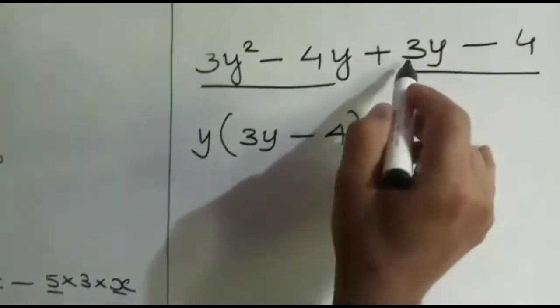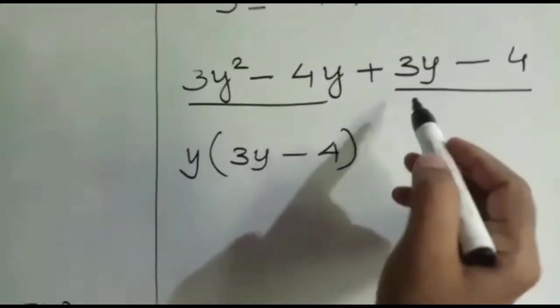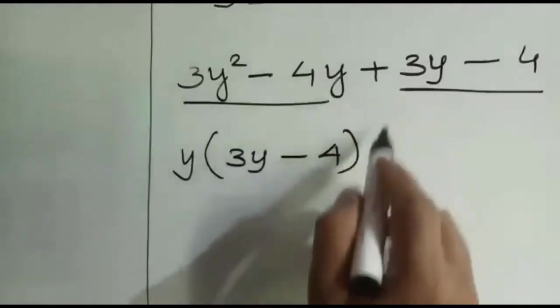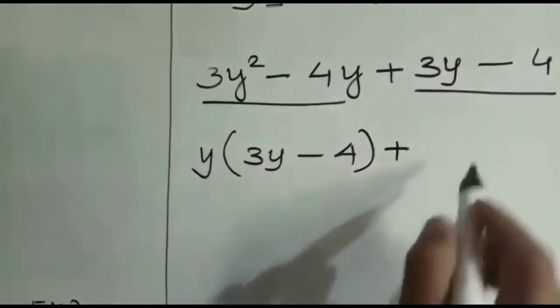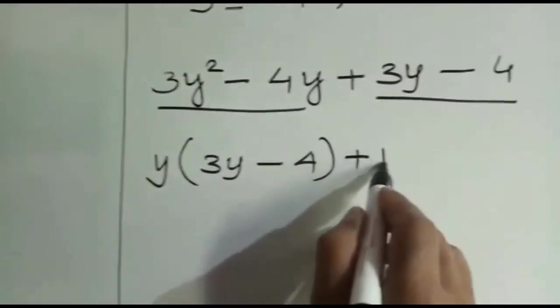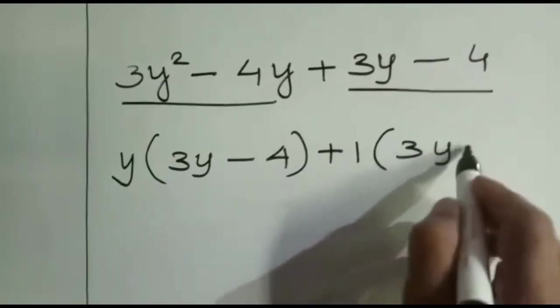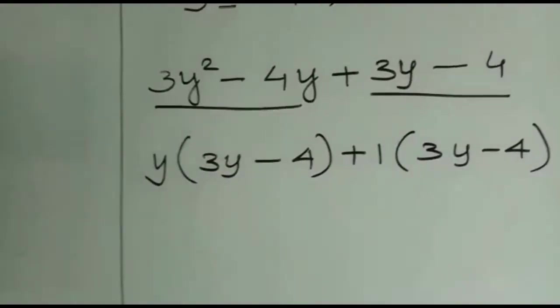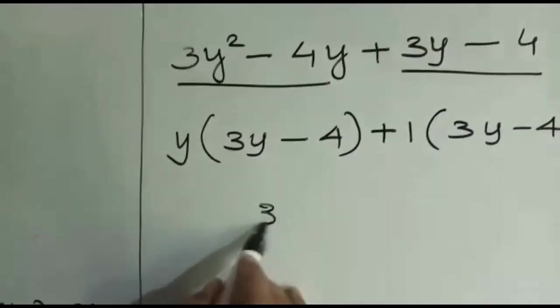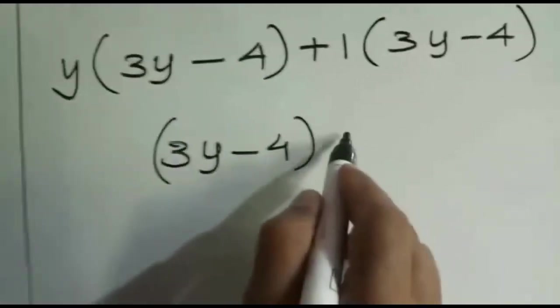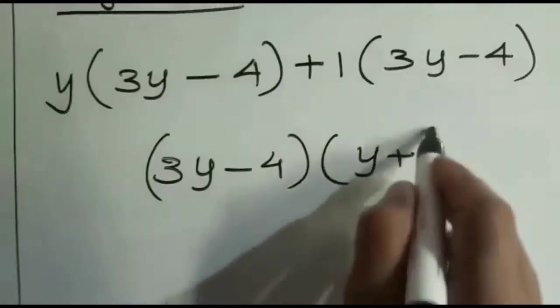From the second group, the sign of the first term, that is plus, is taken common. There is no other common factor other than 1, so 1 is taken as a common factor: (3y - 4). So the factors are (3y - 4) and (y + 1).